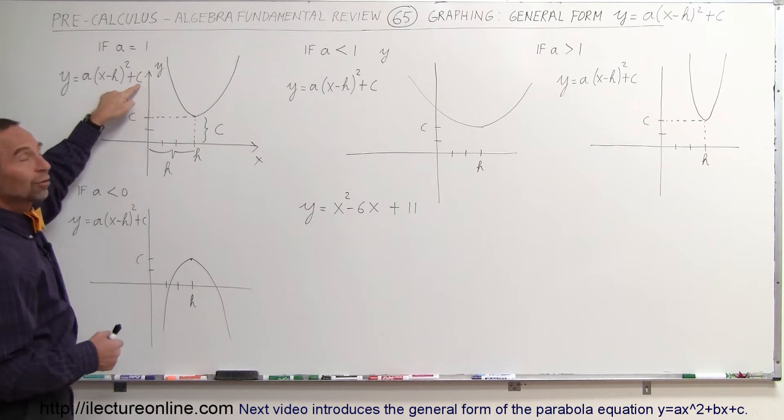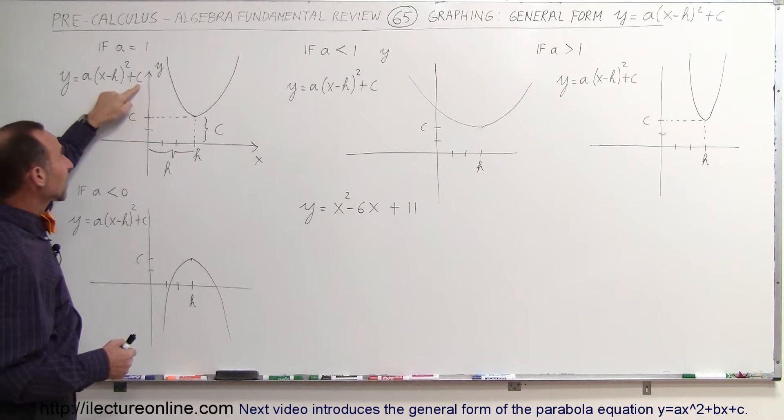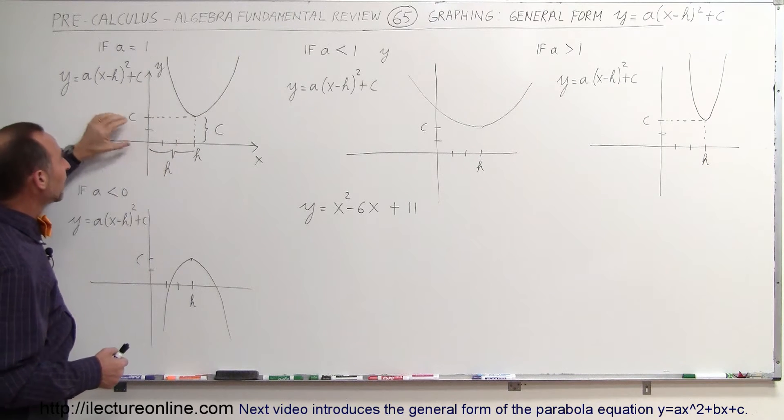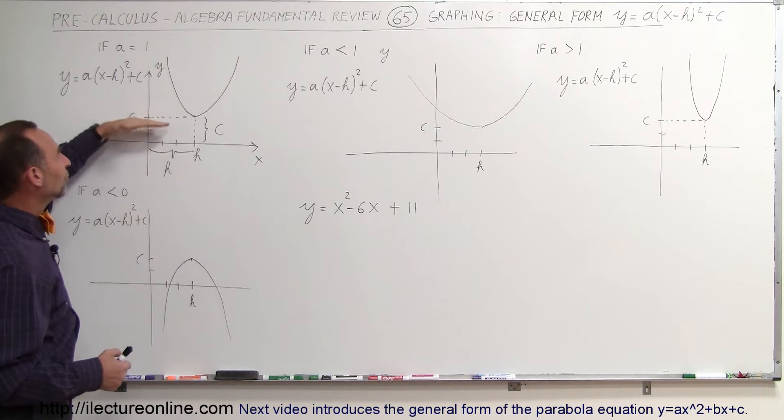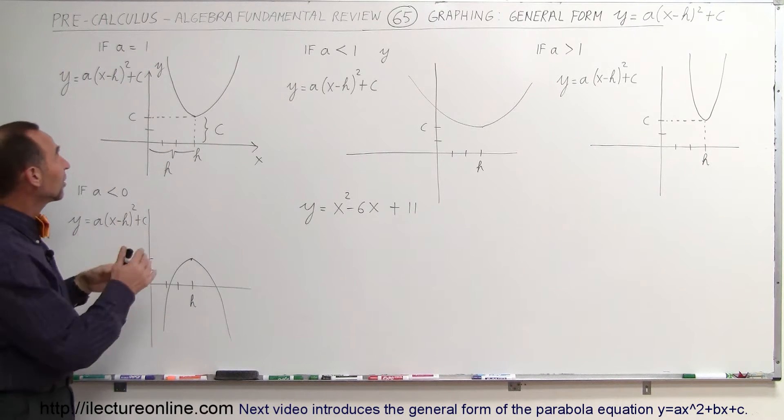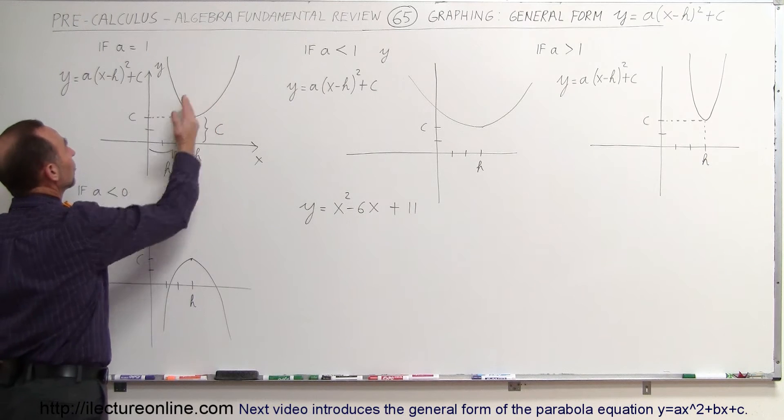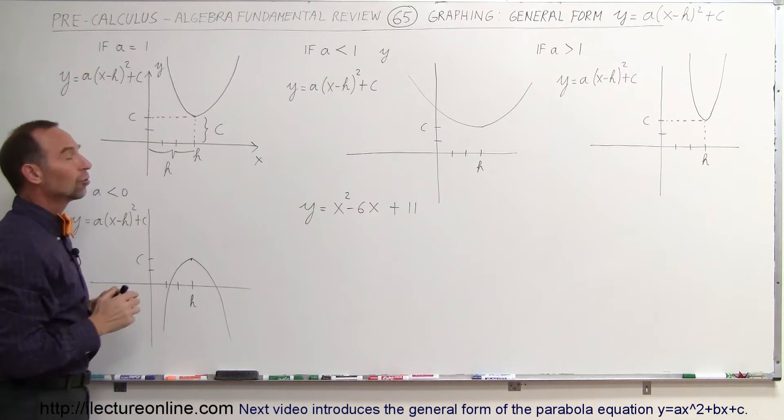The plus c here: if it's a positive number, it will be shifted up. If c is a negative number, it will be shifted down. Whatever the value for c is, that's how far the graph will be shifted up. So in this case, it will be shifted up c units and shifted to the right h units.